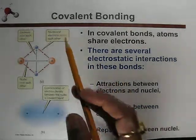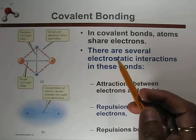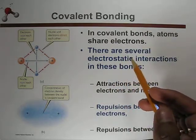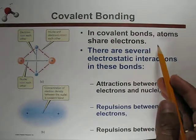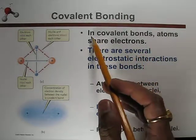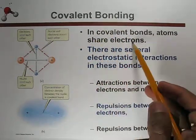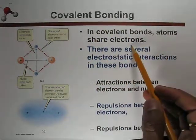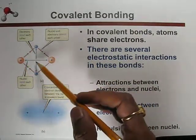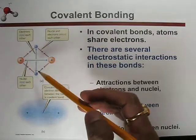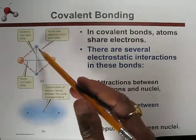In this video we will study about covalent bonding. Covalent bonds form only when non-metal atoms combine. In covalent bonds, atoms share electrons — as shown in this picture, there are two nuclei of two atoms sharing one electron between each other.